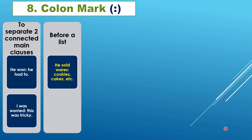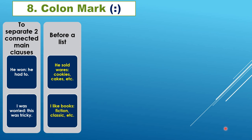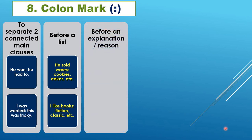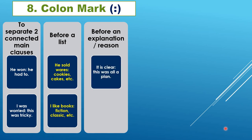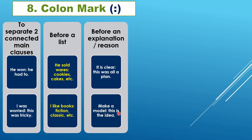Colon is used before a list: 'He sold his wares: cookies, cakes, etc.' and 'I like books: fiction, classic, etc.' It is also used before an explanation: 'It is clear: this was all a plan.' And: 'The idea: make a model.' The colon shows what follows is connected to what precedes it.